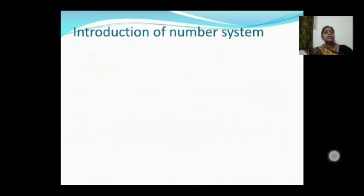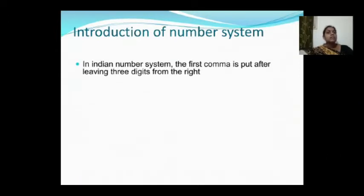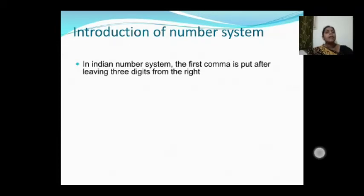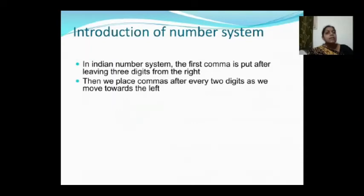In the Indian number system, the first comma is placed after leaving three digits from the right. I have shown an example there. From the right of the number, leave three digits then apply the comma. Then we place a comma after every two digits as we move towards the left.